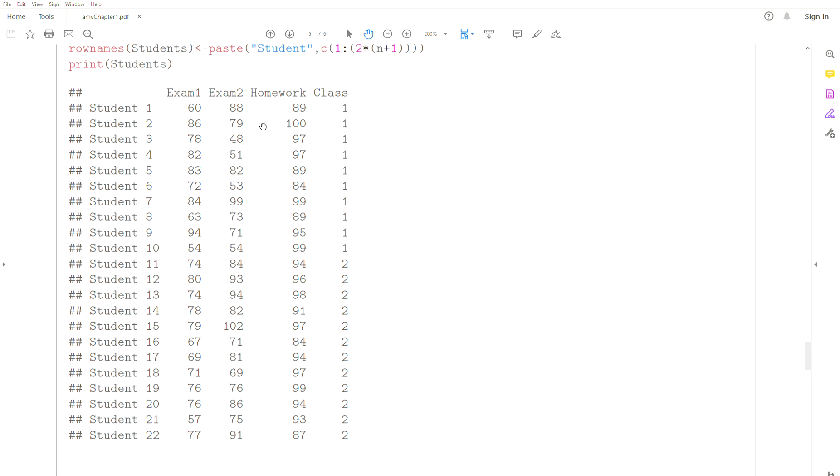And then it's the same information, but we add a variable called class, which indicates which class the student is in. Same information.